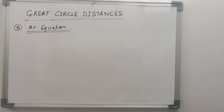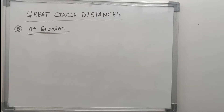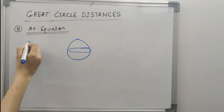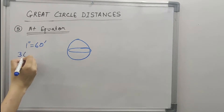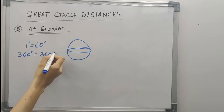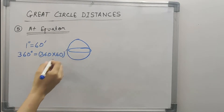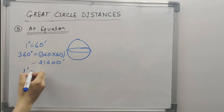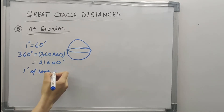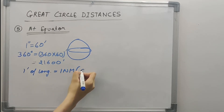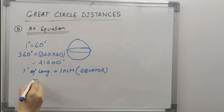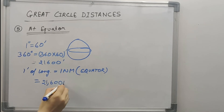Our last case is finding the great circle distance at the equator — specifically the circumference of the Earth. To travel all the way around the equator we cover 360 degrees. Since 1 degree equals 60 minutes, that is 360 × 60 = 21,600 minutes. At the equator, one minute of longitude equals one nautical mile, so the circumference of the Earth at the equator is 21,600 nautical miles.